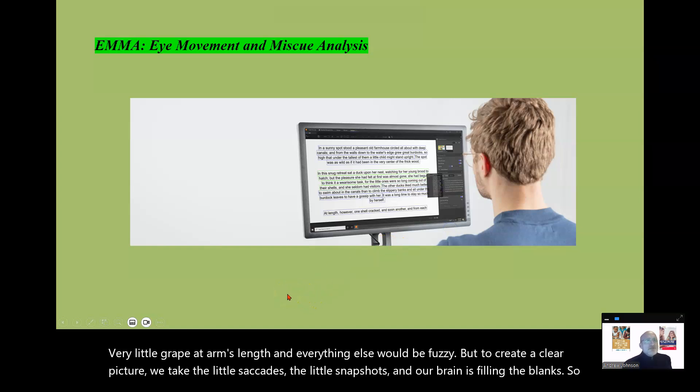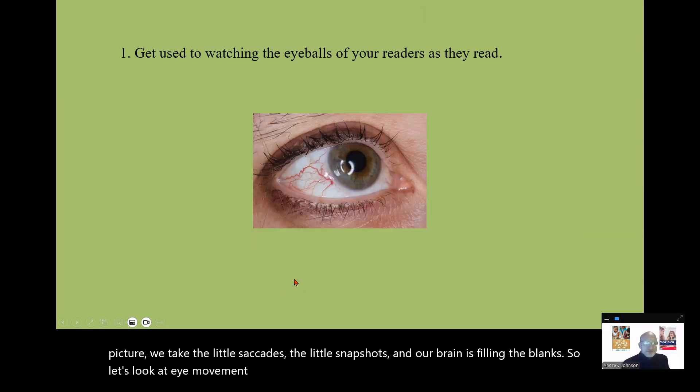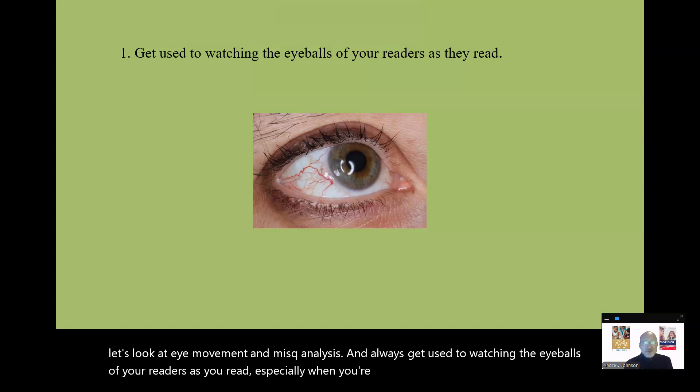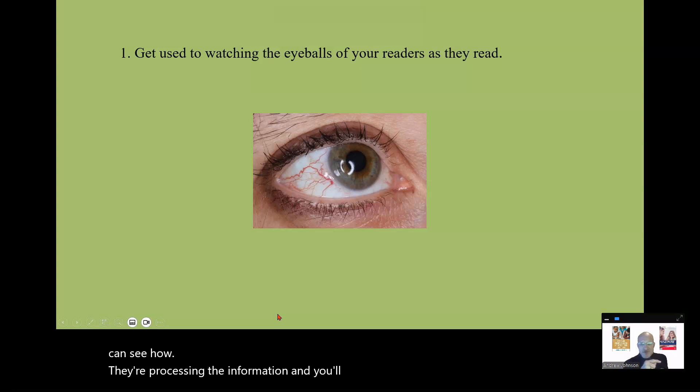So, let's look at eye movement and miscue analysis. And always get used to watching the eyeballs of your readers as you read, especially when you're tutoring. That tells you a lot. You can see how they're processing the information. And you'll notice efficient readers read smoothly. Struggling readers, their eyes are going like this, stilted.